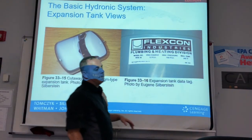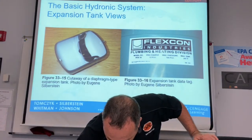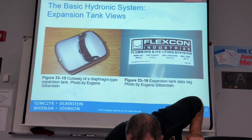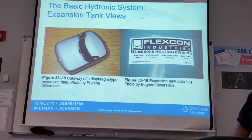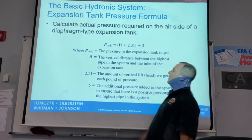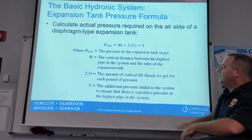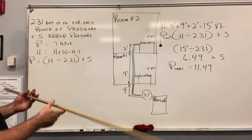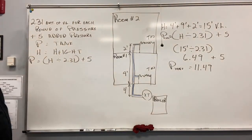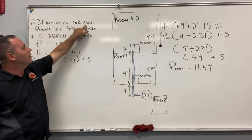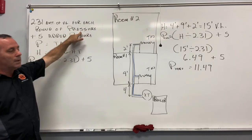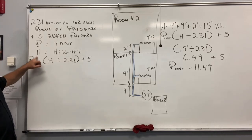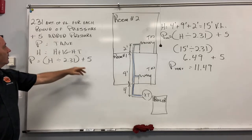To determine the actual pressure for an expansion tank, we must measure the vertical distance between the highest pipe inlet and use it in a formula from page 975. The formula is: P(tank) = (H ÷ 2.31) + 5, where H equals height in feet, 2.31 is the vertical lift per pound of pressure, and 5 is added pressure.